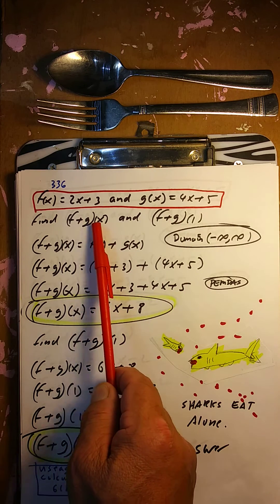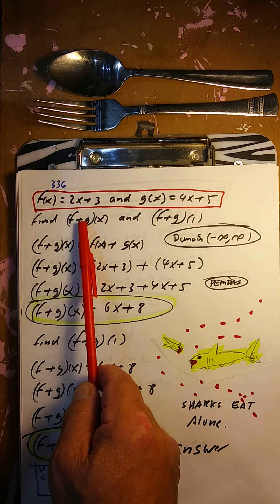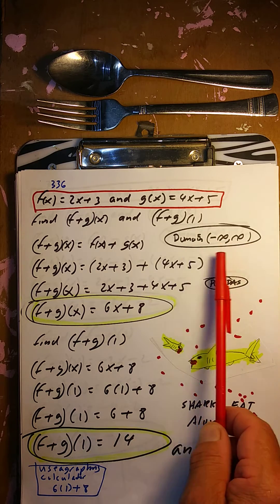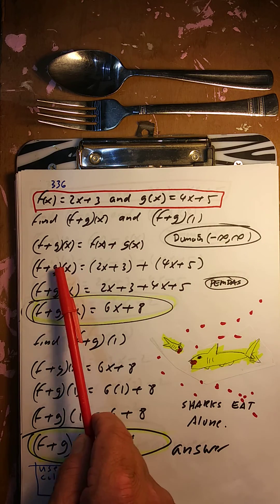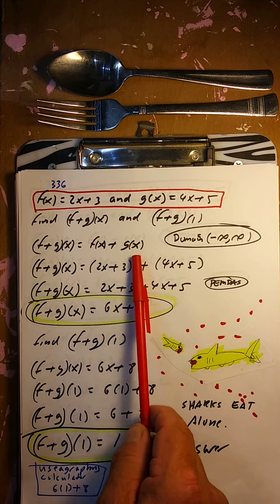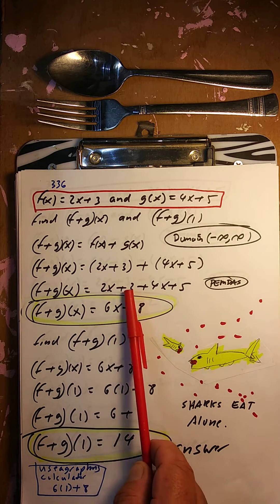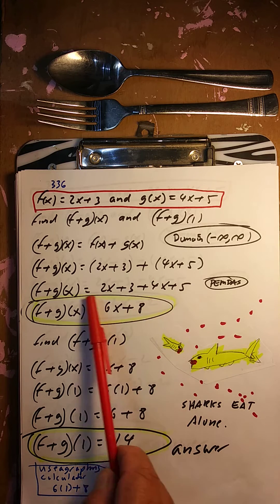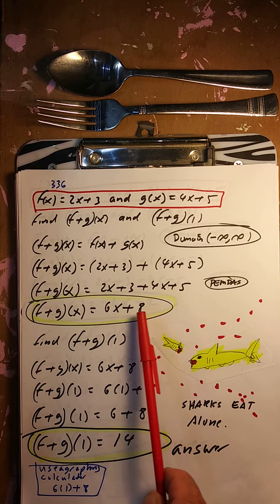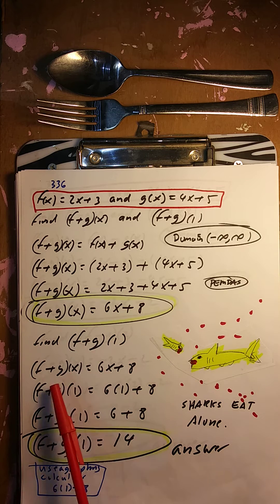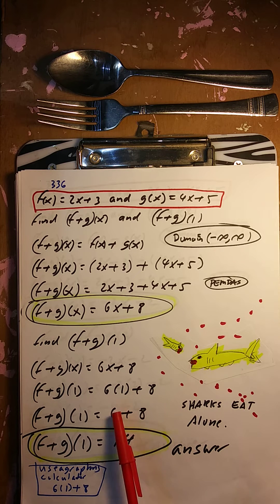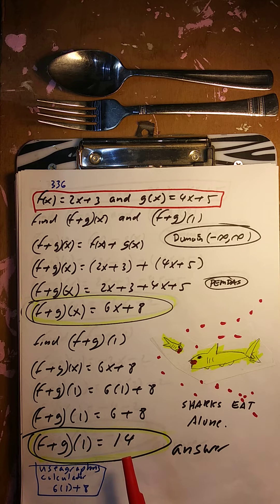Now: add the functions. f plus g of x — first find f plus g of x, then find f plus g of 1. f plus g of x means take f of x and g of x and add them together. So we have 2x plus 3 and 4x plus 5. Can we put them together? Yes. That's going to be 6x plus 8. Now f plus g of 1 means put 1 in there. So 6 times 1 plus 8 is 6 plus 8. So f plus g of 1 equals 14.